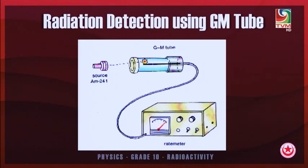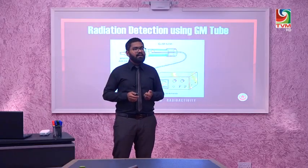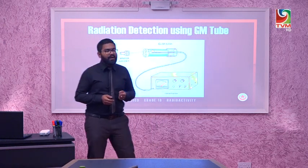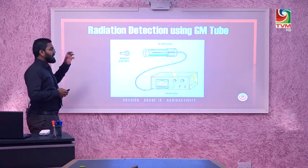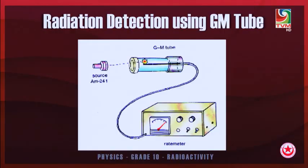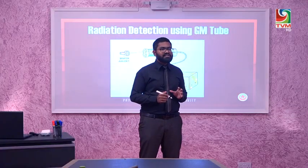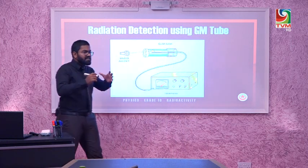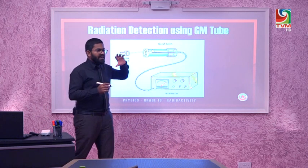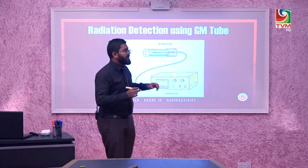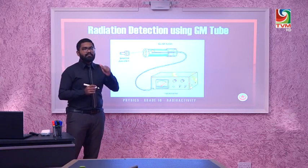Now let us discuss experiments using the GM tube to identify whether a given source is emitting alpha, beta, or gamma radiation. In this example, we use a GM tube and a given radioactive source. The first step is to identify the level of background radiation in the given location before beginning the experiment.